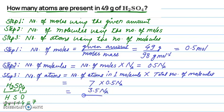So 3.5 Na is the total number of atoms present in 49 grams of H2SO4, and that is our answer. Hope this video helps you with your doubt. Thank you.